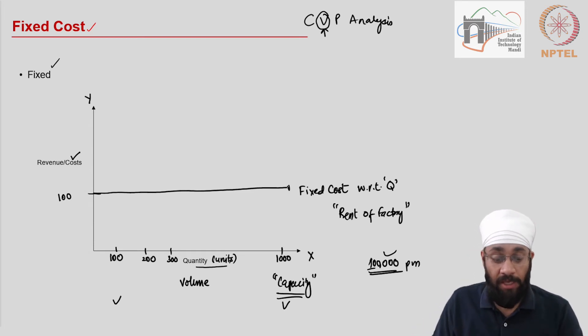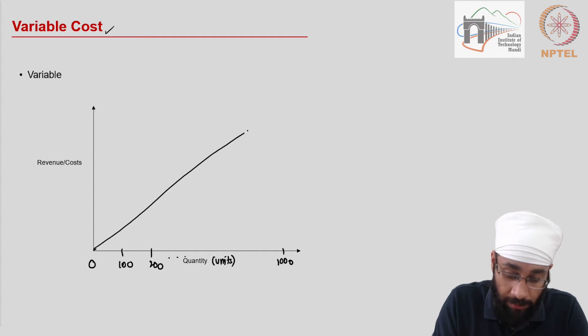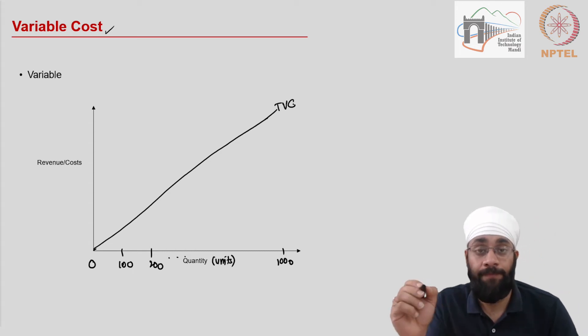Now let us look at the second type of cost which is called a variable cost. It varies with the number of units - that's how it is called variable cost. If you produce zero units, the factory is closed, then you are not spending any money. If you are producing 100, 200 and so on, thousand units, this cost is going to go up. This is the total variable cost, TVC - total variable cost of the business.